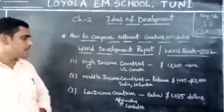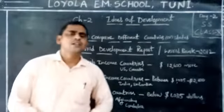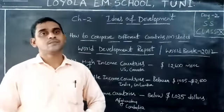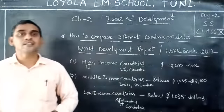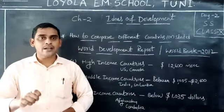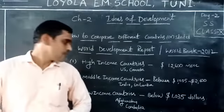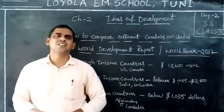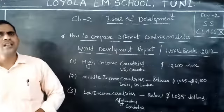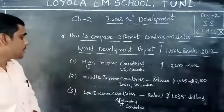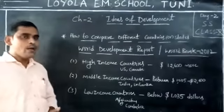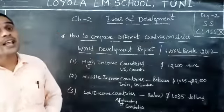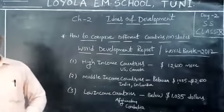The third category is low-income countries. Countries whose per capita income is below 1,035 dollars are called low-income countries. Examples include Afghanistan, Cambodia, and some African countries. This is the classification of countries in the world.